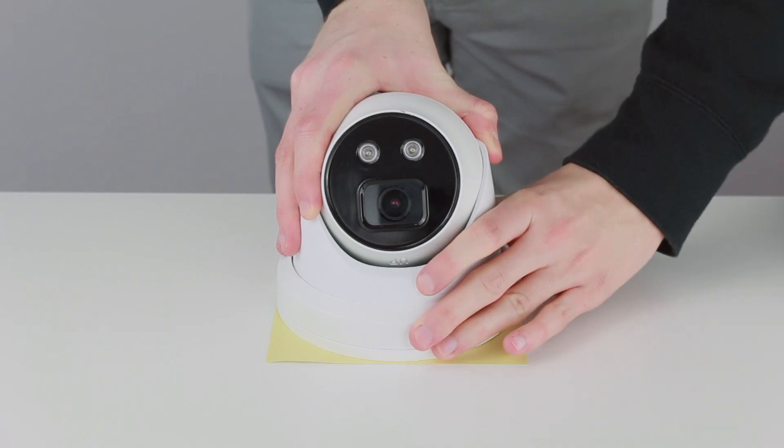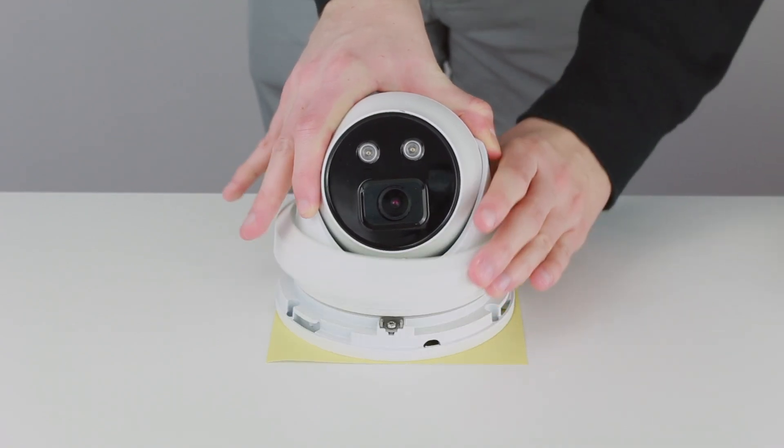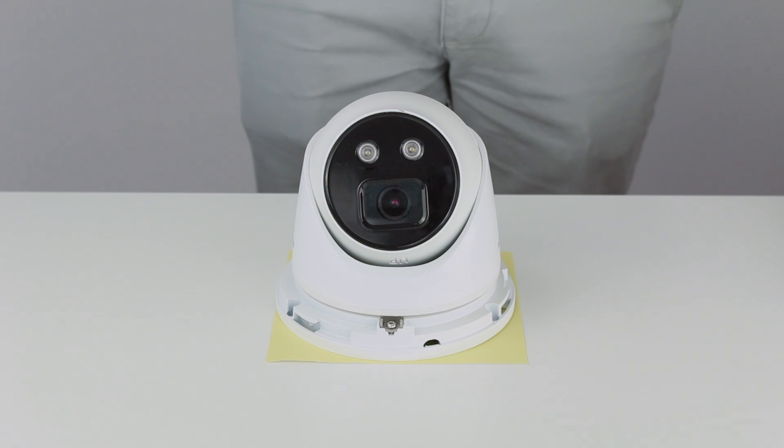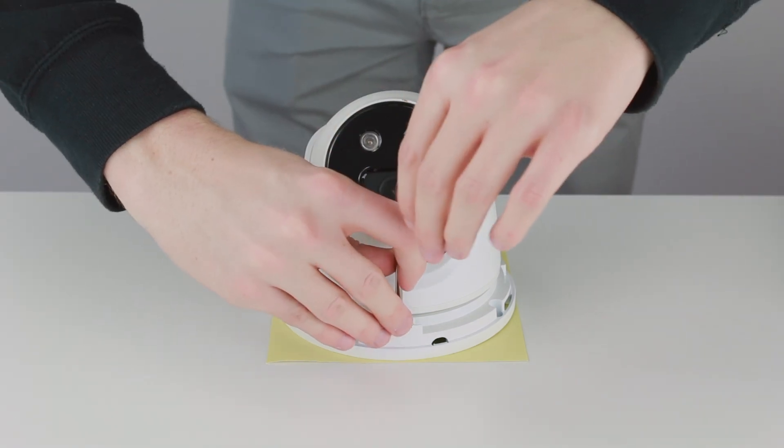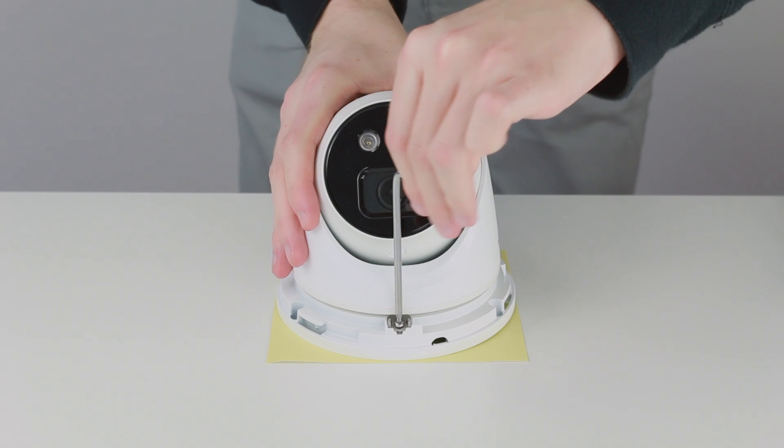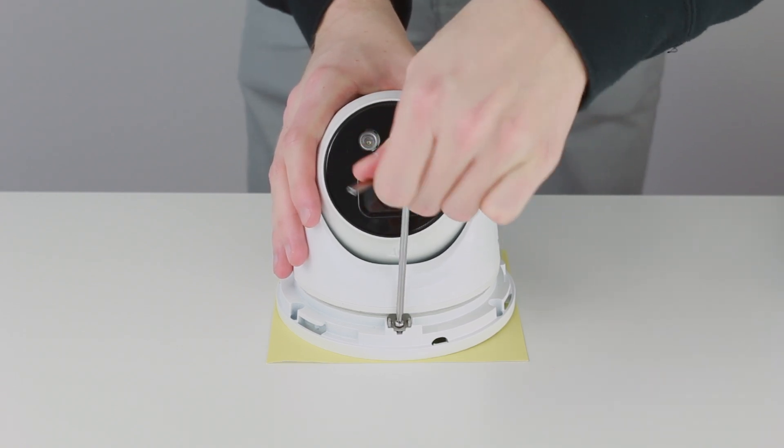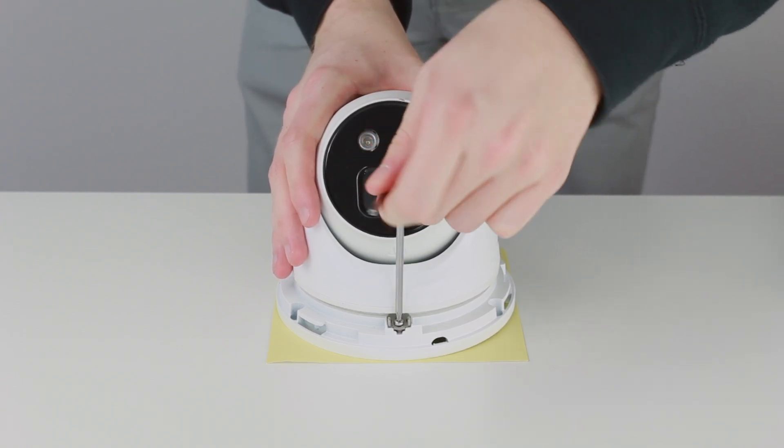The first step is to turn the plastic locking ring at the base of the turret anti-clockwise and remove it. With the ring removed you can now access the locking screw that holds the ball of the turret. Loosen the screw but do not remove it completely as it is spring-loaded and hard to get back in if removed completely.